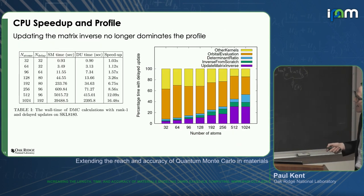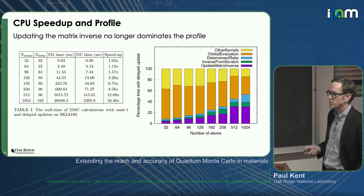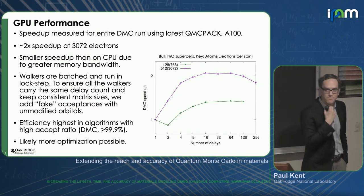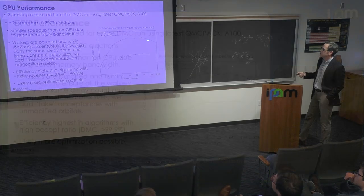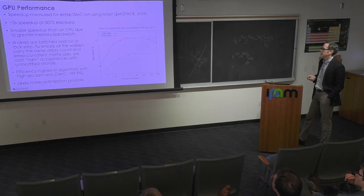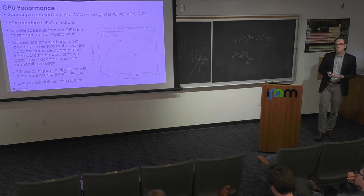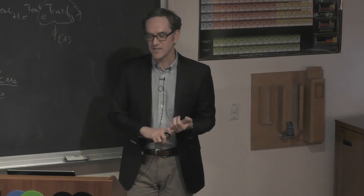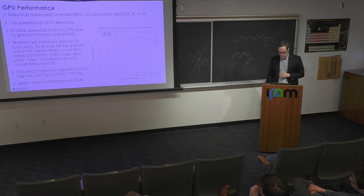We can also see how this has changed the overall breakdown of time in the application — that previous purple bar is now down to taking 25% of the time, and the inverse update is just one kernel of many in the application. For GPU performance, we do get a speedup, but it is not as much. For a 3000-electron run it roughly doubled the throughput; for a 768-electron run we got maybe 30% faster. The GPU has much more memory bandwidth to start with, so the algorithm was never quite as starved as on CPUs. We think there are more optimizations possible, but this is what we're using as default in production right now.